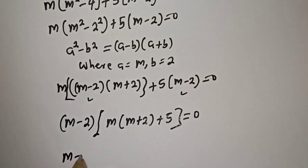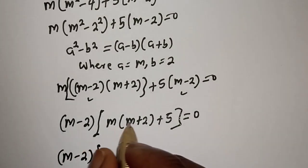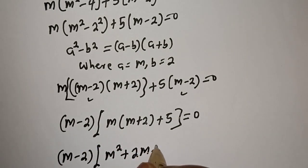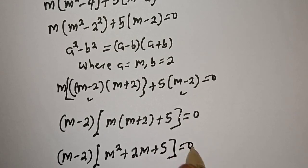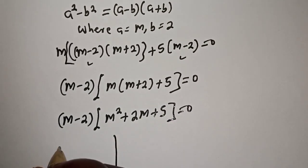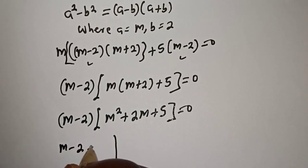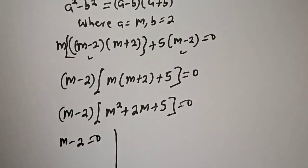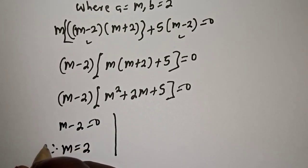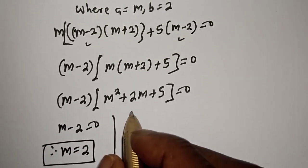Expanding: (m minus 2) times (m squared plus 2m plus 5) equals 0. There are two cases. The first case is m minus 2 equals 0, therefore m is equal to 2.